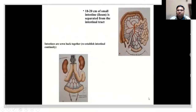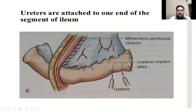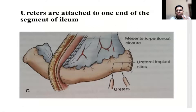The isolated intestinal loop has one end sutured closed and is brought out as a stoma in the right lower quadrant. The left ureter must be mobilized more as it traverses a longer distance, passing below the sigmoid colon. It is critical to bring the conduit through the rectus muscle - failure to do so leads to prolapse, retraction, or parastomal hernia, which are very common complications.